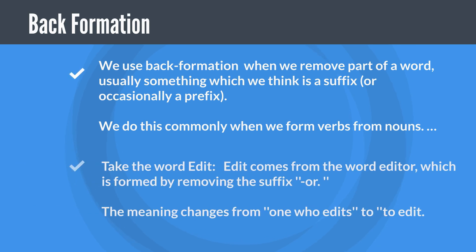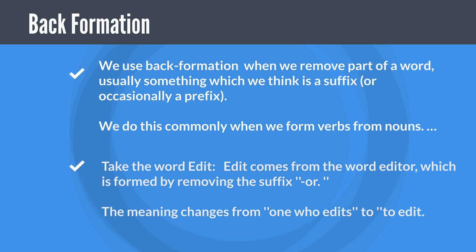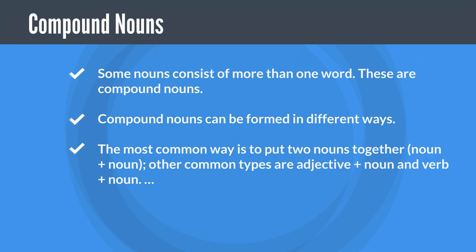We use back-formation when we remove part of a word — usually something we think is a suffix, or occasionally a prefix. We do this commonly when we form verbs from nouns. Take the word 'edit': it comes from 'editor,' formed by removing the suffix '-or.' The meaning changes from 'one who edits' to the verb 'to edit.'